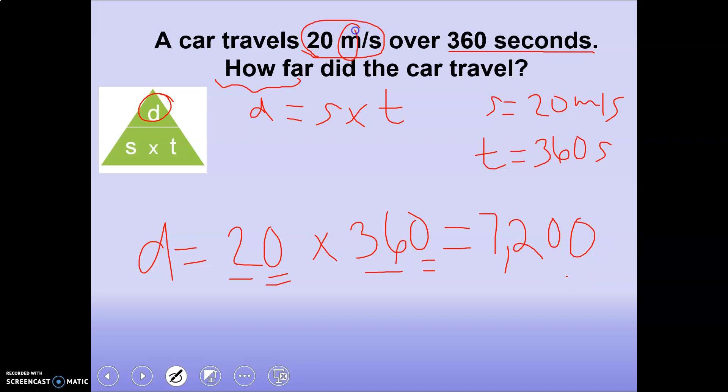And then we were originally in meters per second, so it's going to be meters. So 7,200 meters is the distance that the car traveled.